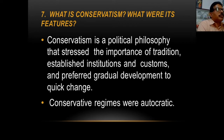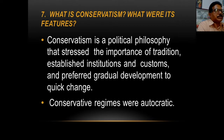What is Conservatism? Opposite to Liberalism is Conservatism. What were its features? Conservatism is a political philosophy that stressed the importance of tradition, established institutions and customs, and preferred gradual development to quick change. The Conservatives wanted tradition, established institutions, church, monarchy and customs to be preserved. They preferred gradual development and were against any sudden change — change is okay, but it should take place slowly.